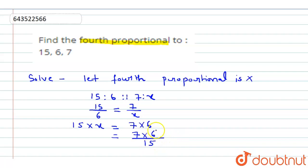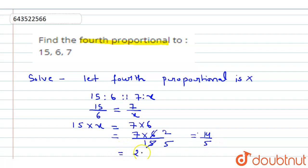Now, 7 multiplied by 6 divided by 15 — on simplifying, we get 14 by 5. When you solve 14 by 5, you get 2.8. So the value of x, or the fourth proportional, is 2.8.